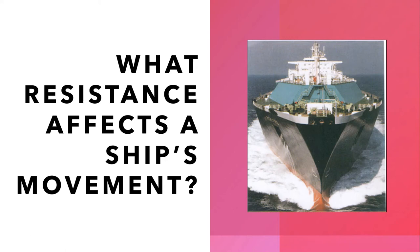In today's video I am going to be talking about the different kinds of resistance that a vessel faces during its movement at sea. The power required to move a ship through the water depends on the propulsive efficiency and on the total resistance of the ship. Resistance is actually a complex function of the displacement of the vessel, the shape of the vessel, and the speed of the vessel. I will talk about the five types of resistance that a vessel faces during its movement.